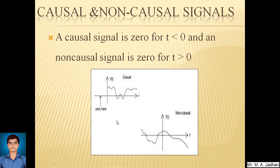Next is causal and non-causal signals. It is very simple to classify them. A causal signal is zero for t less than zero. Here it is shown. For values beyond this line will be t less than zero and for that the signal is zero. Non-causal signals are zero for t greater than zero. So for t greater than zero these are the values which are zero.